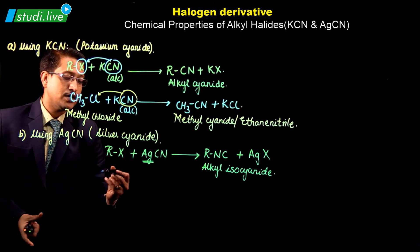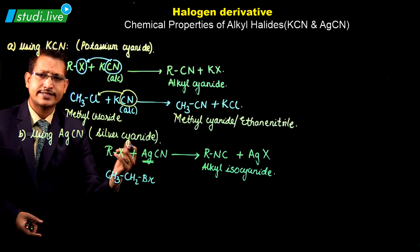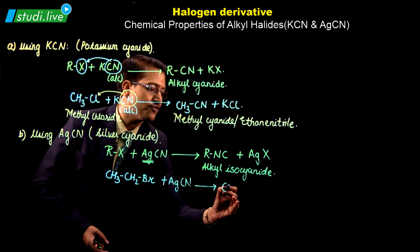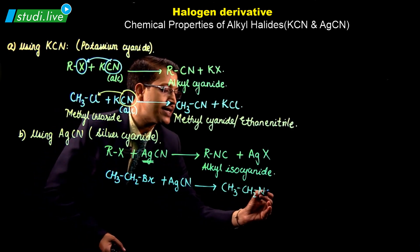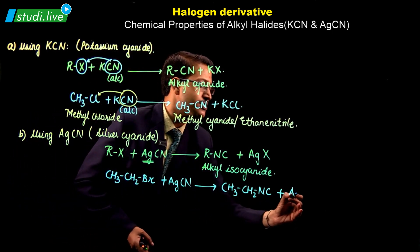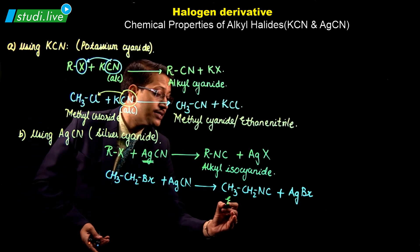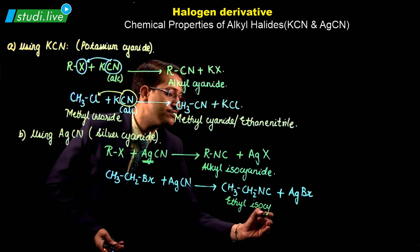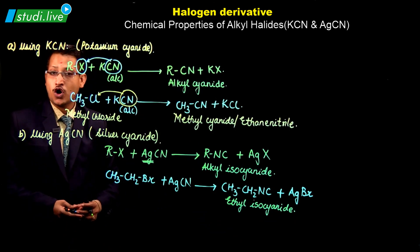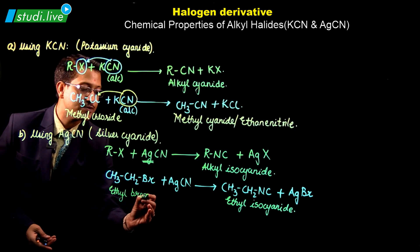Let's take an example: CH3CH2Br plus AgCN (silver cyanide). This gives you the formation of CH3CH2NC plus AgBr. The compound CH3CH2NC will be called as ethyl isocyanide, or you can also call this as propanenitrile. The starting material CH3CH2Br is called ethyl bromide or bromoethane.